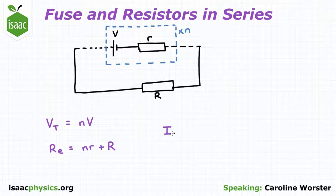The current in the circuit is equal to the total voltage supplied divided by the effective resistance, giving nV over n little r plus capital R.